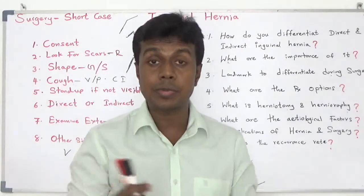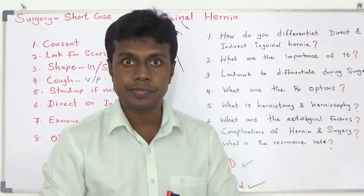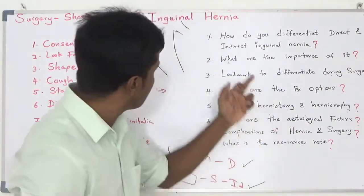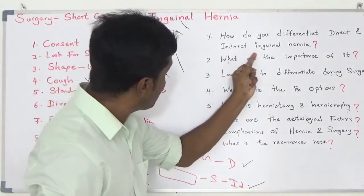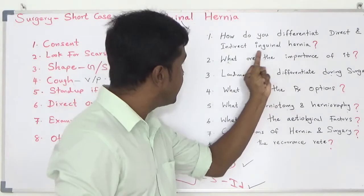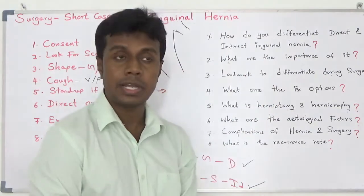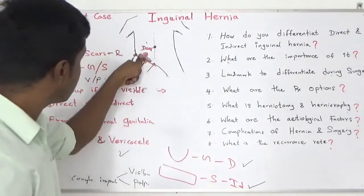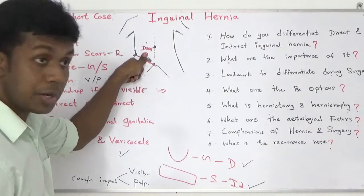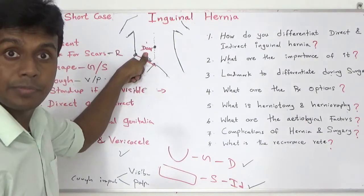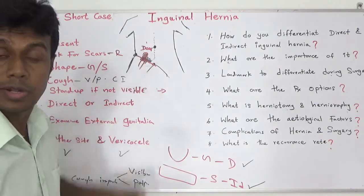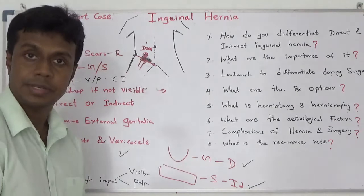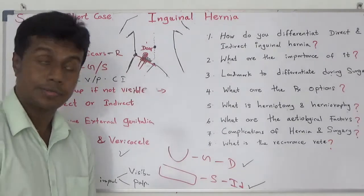At the end of the presentation, the examiner will ask a few questions. For example: 'How do you differentiate direct and indirect inguinal hernia?' Now you know — if you can control the lump with pressure over the deep inguinal ring, it is indirect; otherwise it is direct.